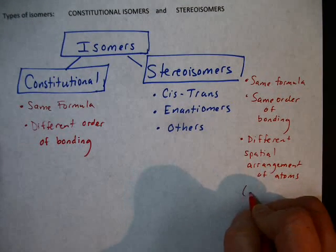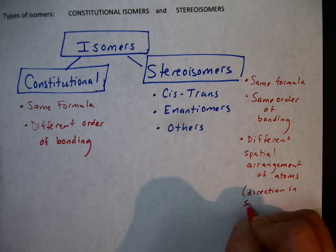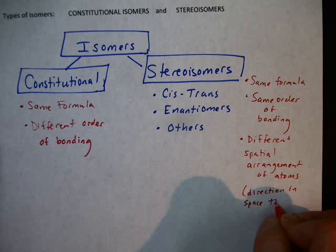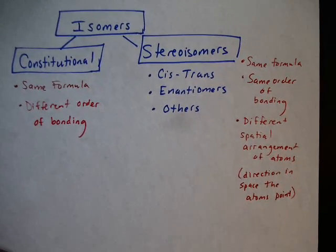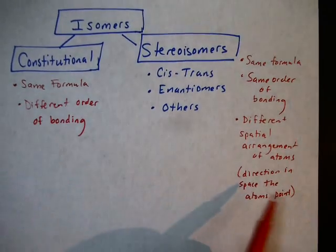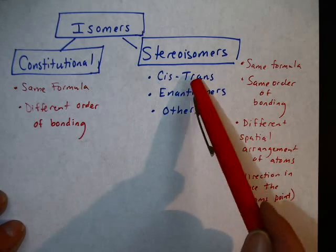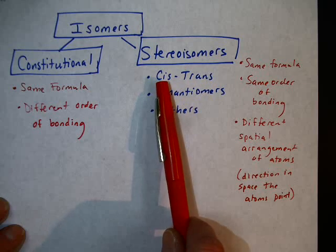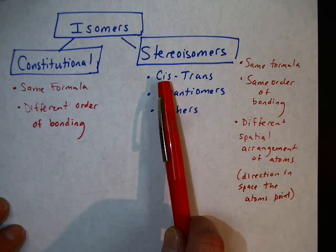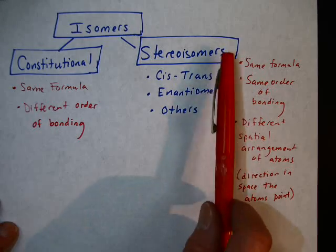What we mean by that is the direction in space the atoms point. We saw that with cis and trans — one pointing up, one pointing down, that was trans; both pointing up or both pointing down, that was cis. That's what's different with stereoisomers.